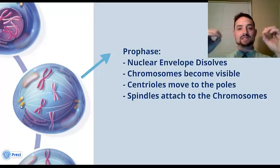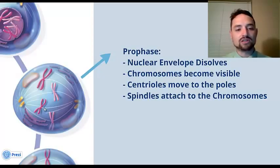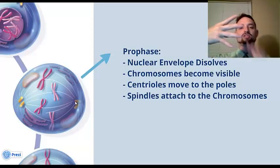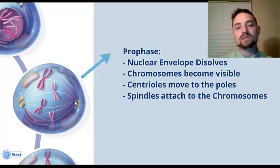The centrioles—that's these yellow things here on the end—in animal cells, animal cells have these, plants do not. The centrioles will move to opposite sides of the cell, creating poles. And then spindles, which in this case are these little white lines here, will grow from those spindles out like projections like this and start attaching to the centromeres of the chromosomes. So the spindles start attaching to the chromosomes.